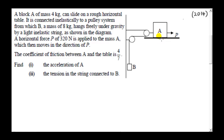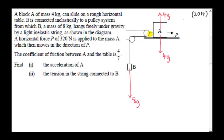A block A of mass 4 kilograms can slide on a rough horizontal table. Its weight is 4G, and because it's in contact with the table there's a normal force of 4G vertically up, since there's no acceleration in the vertical direction. The block is connected via a light inelastic string to a pulley system from which mass B of 8 kilograms hangs freely under gravity, so the weight of B is 8G. Light means the string's mass is zero; inelastic means it's inextensible.